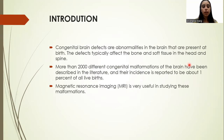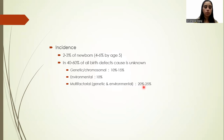Introduction. The congenital brain defects are abnormalities in the brain that are present at birth. The defect typically affects the bone and the soft tissue in the head and the spine. More than 2,000 different congenital malformations of the brain have been described in the literature, and their incidence is reported to be about 1% of all live births. MRI is very useful in studying these malformations.